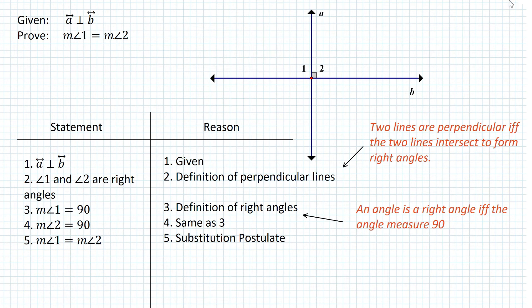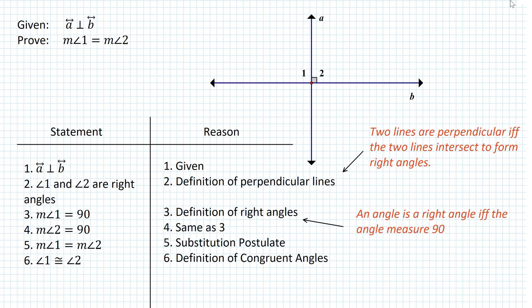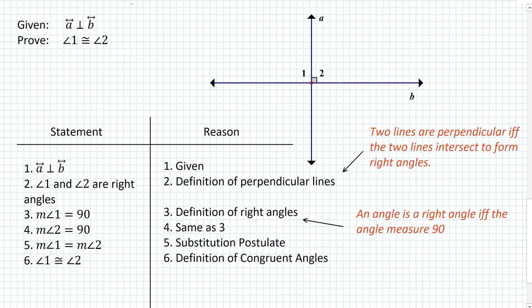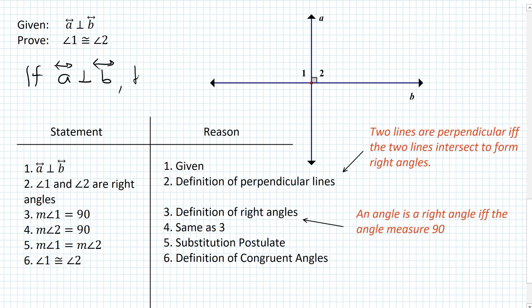Let's take this proof a step further and state that angle 1 and angle 2 are congruent. If we state that, that will be the definition of congruent angles. Notice that we can change what we want to prove — we didn't just prove that measure of angle 1 and 2 are equal in measure, we went a step further and proved that angle 1 and 2 are congruent. So now we can develop a new theorem based on this. Here: if line A is perpendicular to line B, then angle 1 is congruent to angle 2.